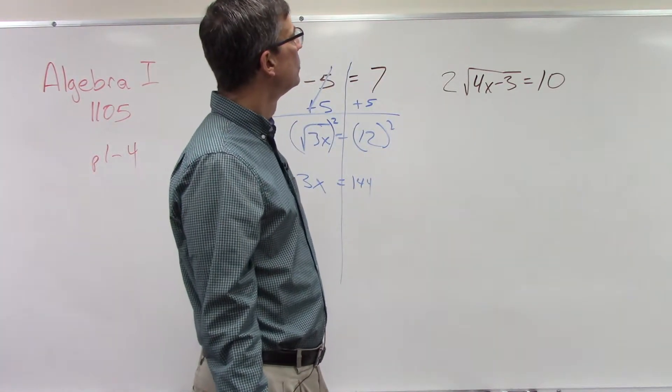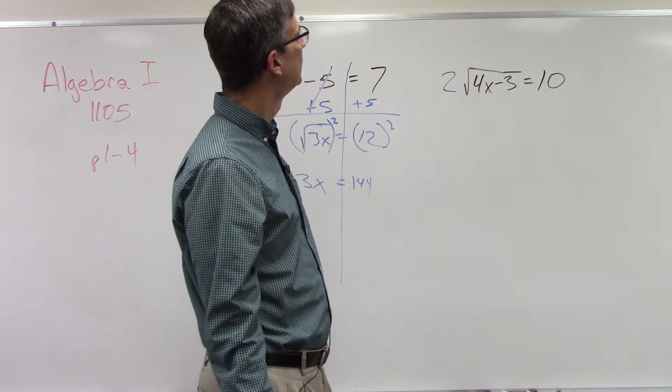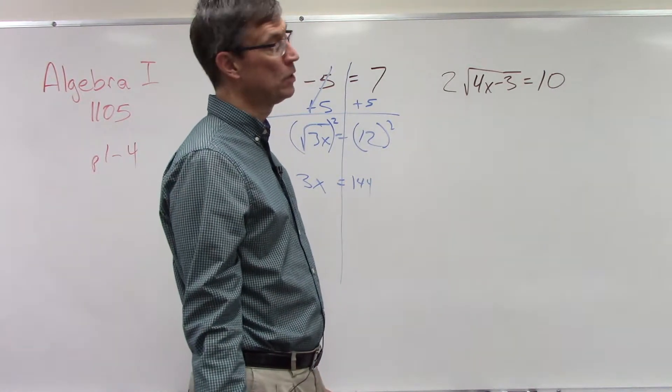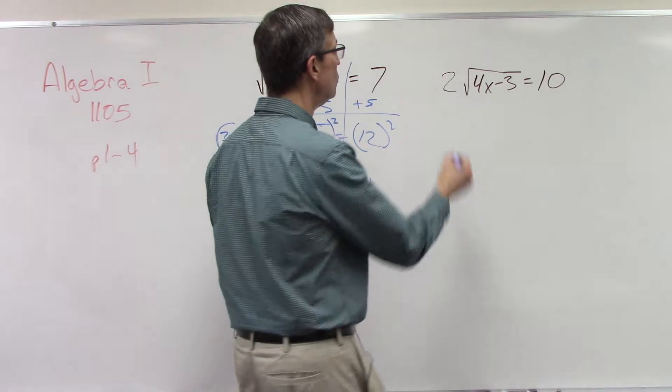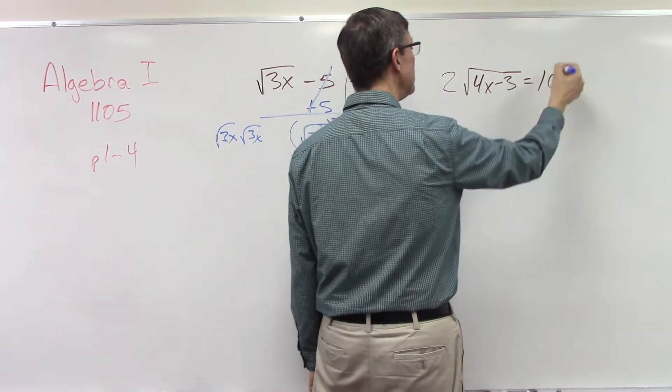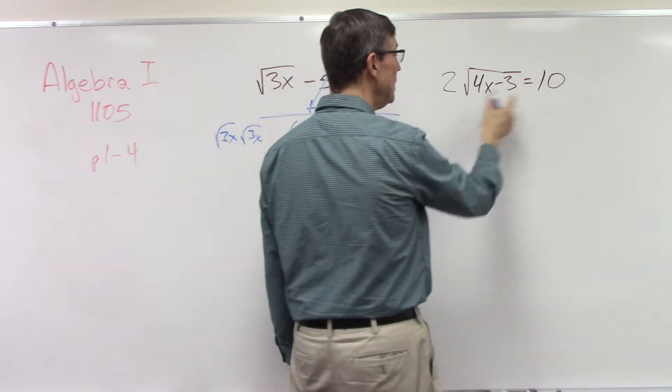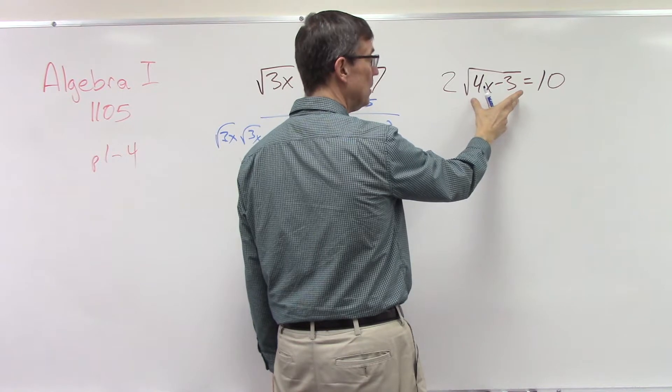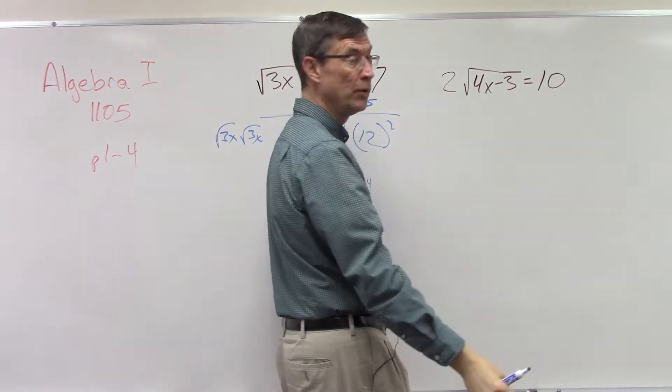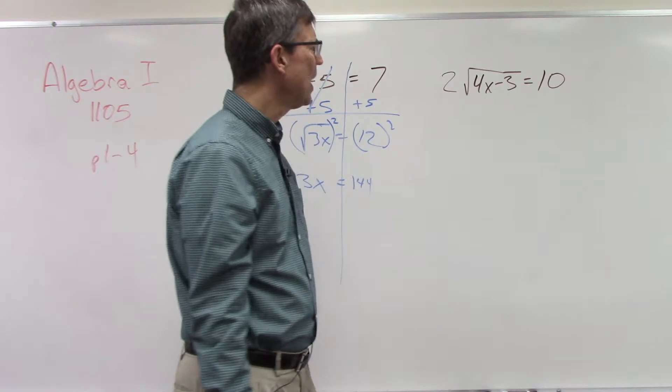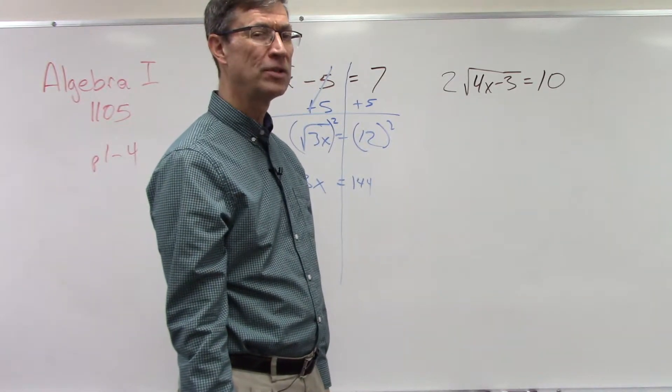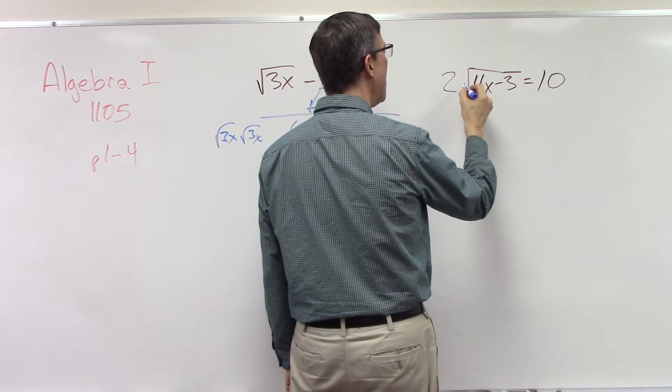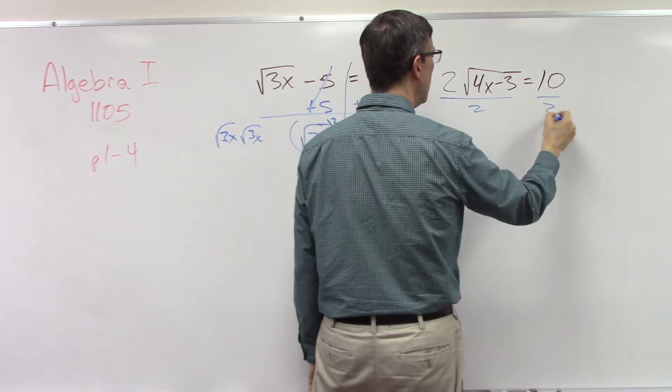The first step - we could put parentheses around both sides and square them, and that would give you 100. But let's try to isolate the radical first. I think that'll make it a little faster and easier for us. Since I have 2 times the radical, I'm going to divide by 2 on both sides first, so that just leaves the square root of 4x minus 3 under the radical equals 10 divided by 2, which is 5.